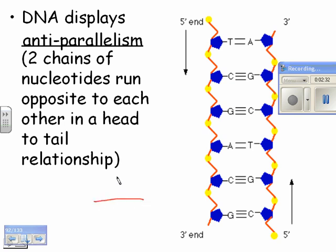So if you remember, perpendicular is like this. Parallel is like this. And anti-parallelism for this means that one strand goes in one direction and the other strand is going in the opposite direction. So the two chains of nucleotides run opposite to each other in a head-to-tail relationship.